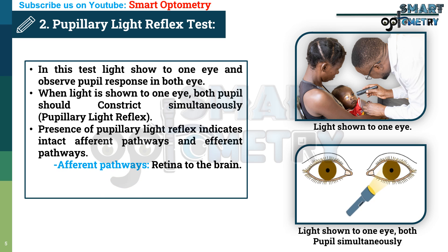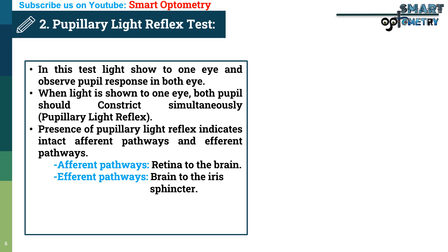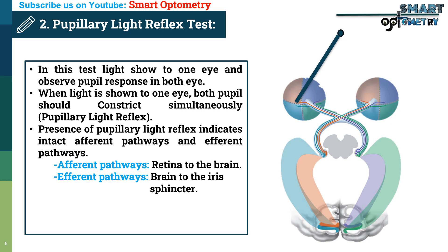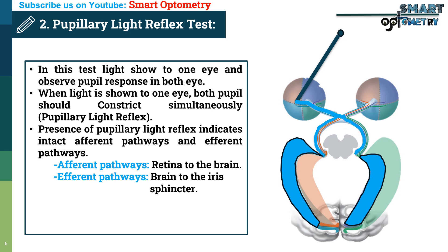The afferent pathways transport the visual stimulus from the retina to the brain. The efferent pathways transport the visual stimulus from the brain to the sphincter muscles of the pupil. So when light is shown to the child's eyes, the light is converted into a visual stimulus by rods and cone cells, then this visual stimulus is transported by the afferent pathways to the brain. The brain then sends a signal to the sphincter muscles of the pupil to constrict, which is transported by the efferent pathways. So a child with a normal visual pathway, when light is shown to one eye, both pupils should constrict simultaneously.